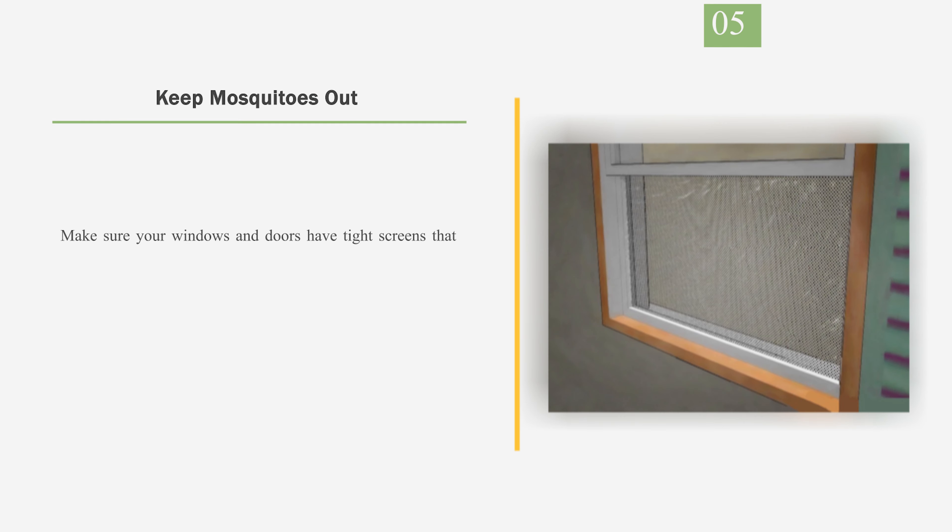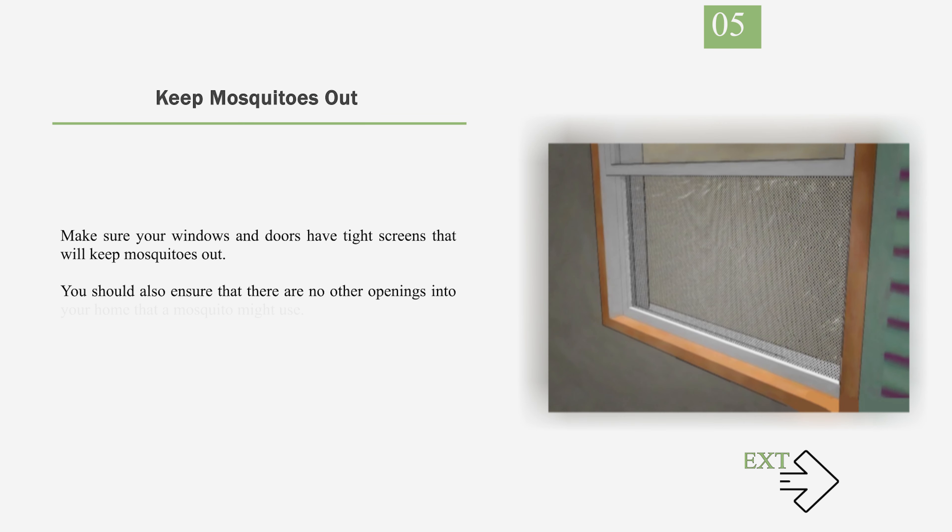Number 5: Keep mosquitoes out. Make sure your windows and doors have tight screens that will keep mosquitoes out. You should also ensure that there are no other openings into your home that a mosquito might use. Installing a screened-in porch might be a good option if you would like to spend more time outdoors without having to worry about mosquitoes.